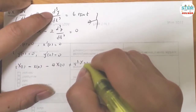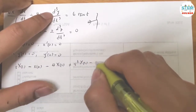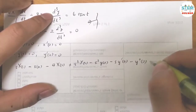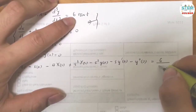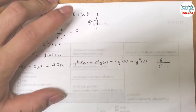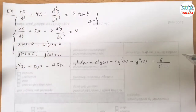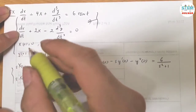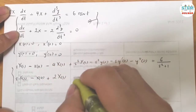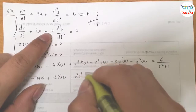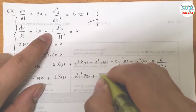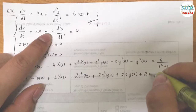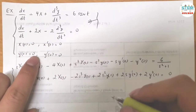For the first transformed equation, the third-derivative term gives S cubed times capital Y(S), and the right-hand side becomes 6 over S squared plus 1. For the second equation, I have S times capital X(S) minus X(0), plus 2 capital X(S), minus 2S cubed capital Y(S), plus 2S times Y'(0), plus 2S to the first times Y'(0), plus 2Y(0) equals 0.